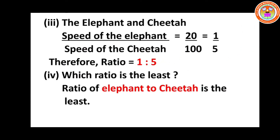Subdivision three — elephant and cheetah. Speed of elephant divided by speed of cheetah: 20 divided by 100. Cancel zeros to get 2 by 10, divide by 2 to get 1 by 5. Therefore the ratio is 1 is to 5. Now which is the least? The ratio of elephant to cheetah — 1 is to 5 — is the least, as it is the smallest. Have you all understood children?